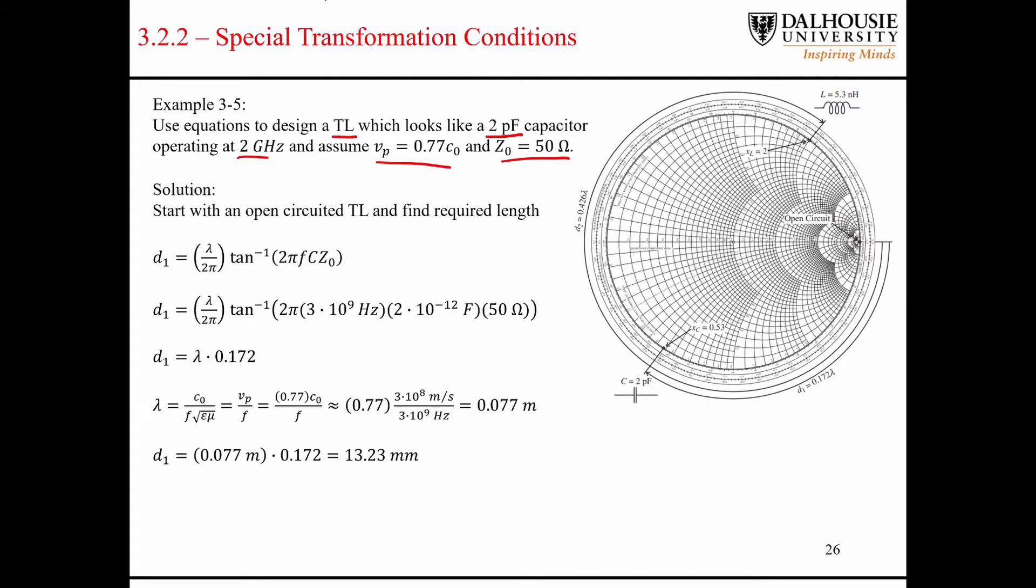So one approach is to use the equations that we just derived directly. Like I just said, we know all these values. We can just plug everything in, and we see that our transmission line is 17.2% of a wavelength.